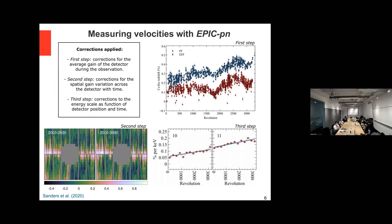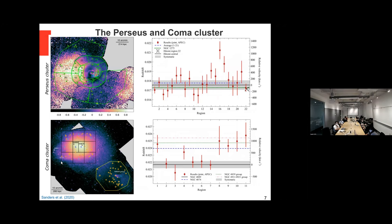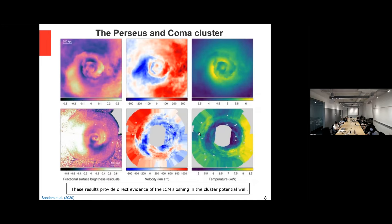This calibration was applied to the Perseus and Coma clusters, except for the central part where it cannot be applied. For Perseus, the velocity obtained with this method is in good agreement with the velocity obtained with Hitomi — a good validation. For Perseus cluster there are hints of a gas sloshing pattern: the middle velocity panel shows blue-shifted gas in blue and red-shifted gas in red, which are hints of gas sloshing and would be direct evidence of gas sloshing from velocity measurements alone — but again, we don't have the cluster core.